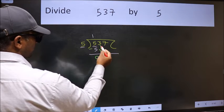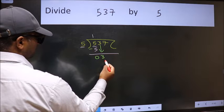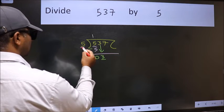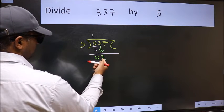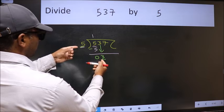After this, bring down the beside number. So 3 down. Now here we have 3 and here 5. 3 is smaller than 5.